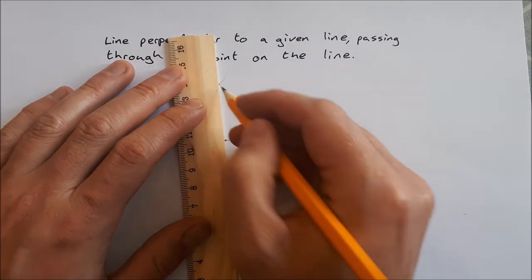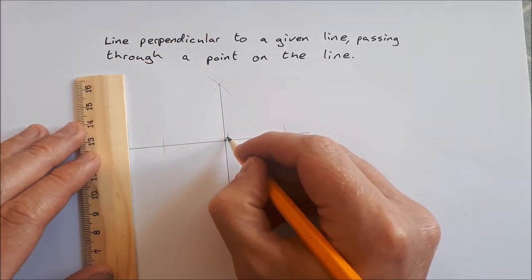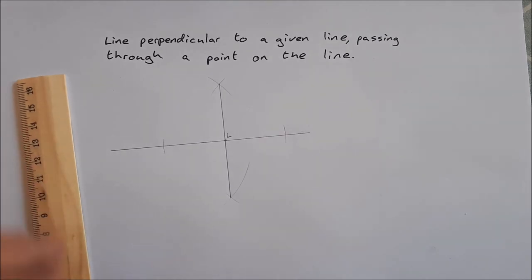the line that you draw should go through your original point and is then perpendicular to the original line.